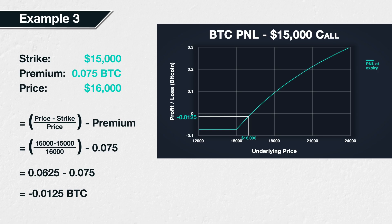Notice this time that the price still moved in the desired direction and the option did have some value at expiry; however, this value was not large enough to make up for the premium paid. This resulted in a small loss. This highlights why it is not enough for the underlying price to simply move above the strike price for the call option to make a profit — at expiry the price needs to move far enough to compensate for the premium paid, in other words to the break-even point, which we will calculate later in section four.